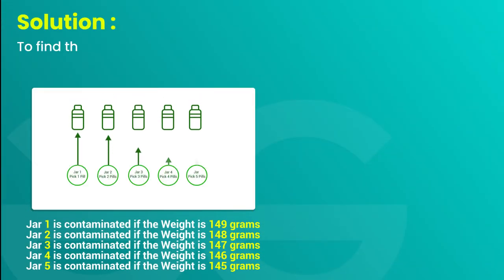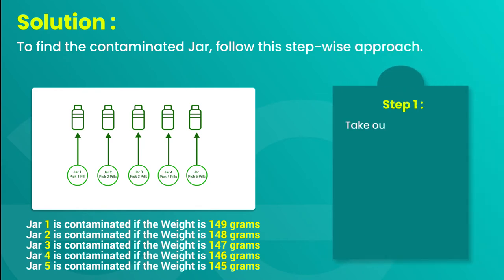Solution. To find the contaminated jar, follow this stepwise approach. Step 1: Take out 1 pill from jar 1, 2 pills from jar 2, 3 pills from jar 3, 4 pills from jar 4, and 5 pills from jar 5.